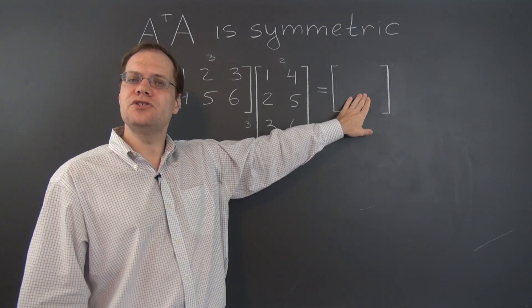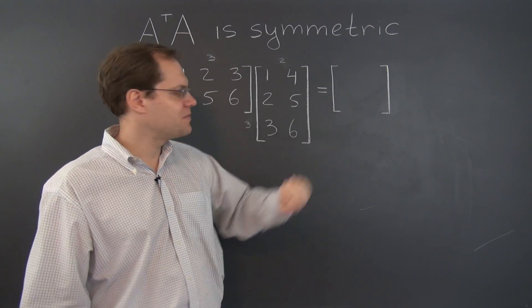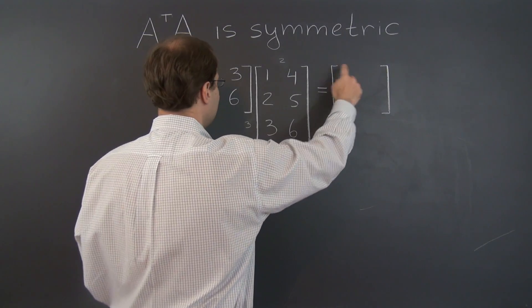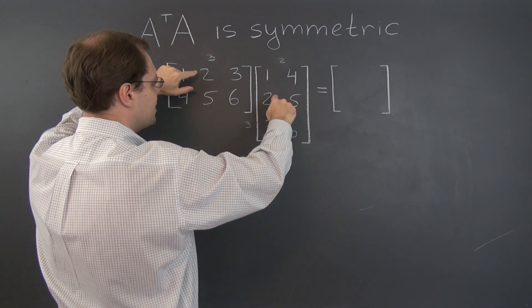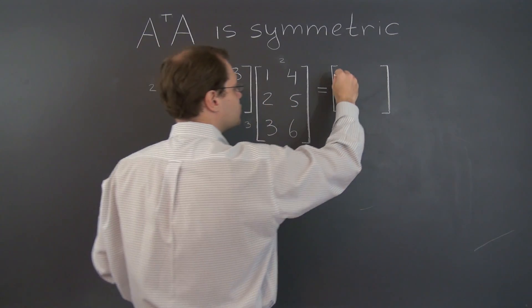Now let's determine the individual entries of this product. Let's see. The first entry equals 1 plus 4 plus 9, so it's 14.